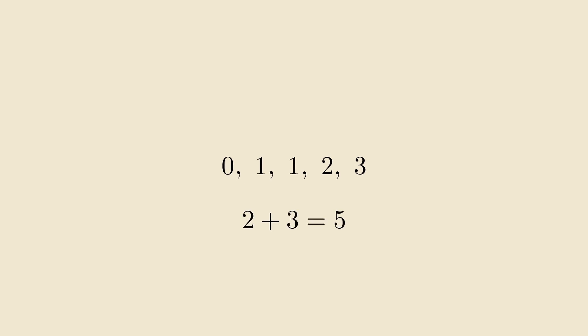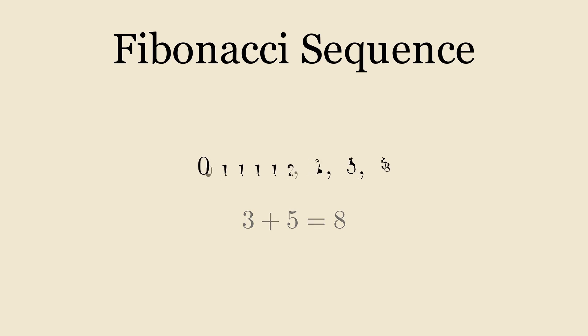Keep doing this and you generate a sequence that is known as the Fibonacci sequence, where you generate a new number by adding the last two numbers of the list. You can keep doing this forever and the numbers get infinitely large.